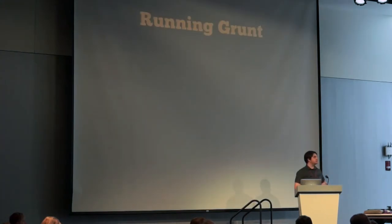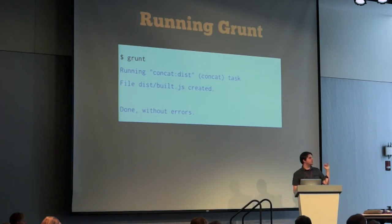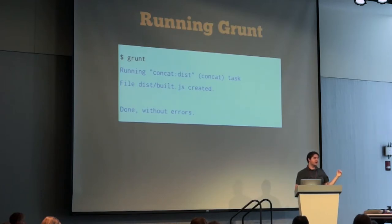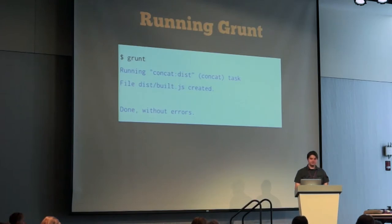Let's get on to actually running Grunt. Like I said, really simple — go to the command line and type grunt. This is the output based on that Grunt file we have. It says 'running concat' which is the task name, and 'dist' which is the target. Then it says it created the file for us. If we were to open up that build.js file, we would see all three files combined into one. And then it says 'done without errors.' If there was an error somewhere, it would have failed and made it very obvious.